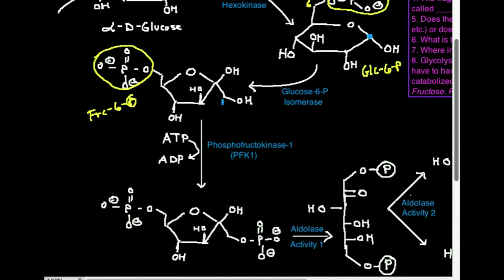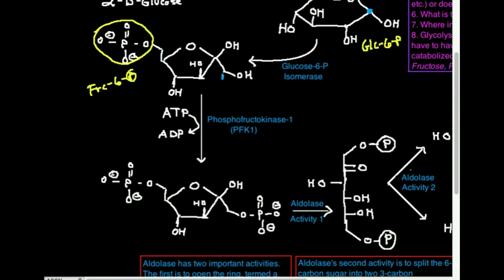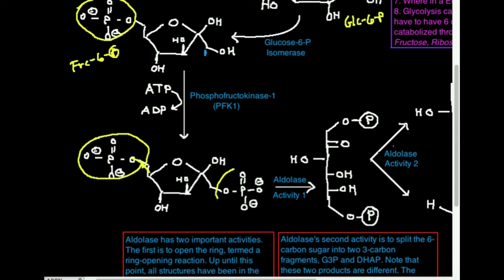Next enzyme, next step: phosphofructokinase-1, typically abbreviated as PFK1. We'll talk more about this enzyme in other videos, but suffice to say, it's the rate-limiting step of glycolysis and also the main regulatory point of glycolysis. We already have a phosphate on the sixth position — it's a kinase, so it's going to phosphorylate a phosphofructo molecule, which is handy because this is fructose-6-phosphate. So we're going to phosphorylate it at the one position, and that's what you see right here — not only do we have a phosphate still on the sixth position, but we also now have one on the one position.